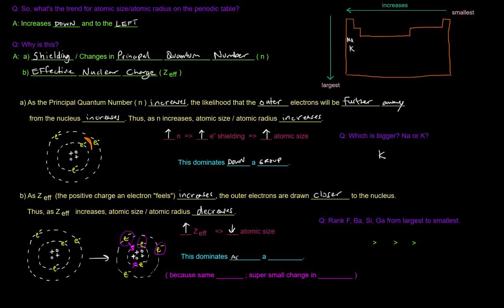So as effective nuclear charge increases, as the charge that these electrons outside of the nucleus experience is greater, then the atomic size will decrease. Now, this dominates across a period.